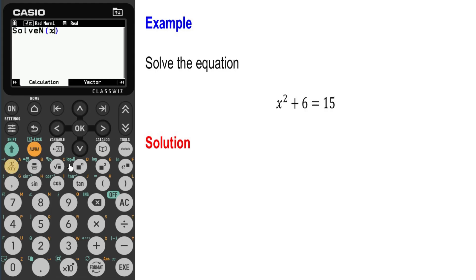Let's input the equation. We have x squared plus six equals fifteen. Then after this, let's press the comma key and tell the calculator we are solving this equation for values of x. So we press the x key.